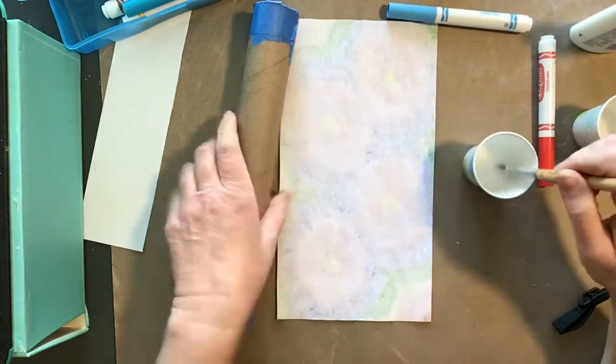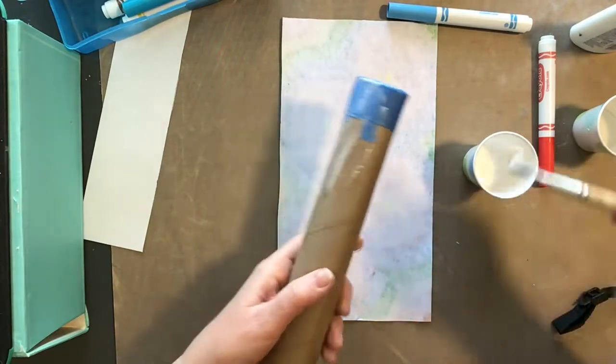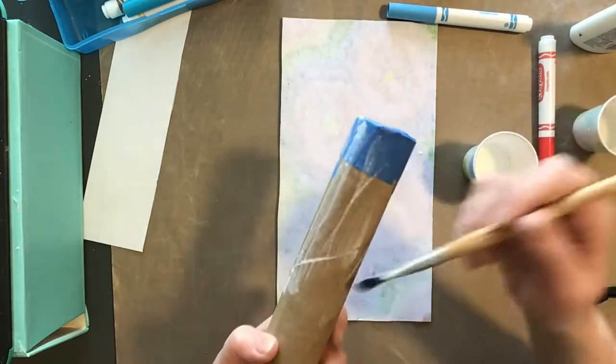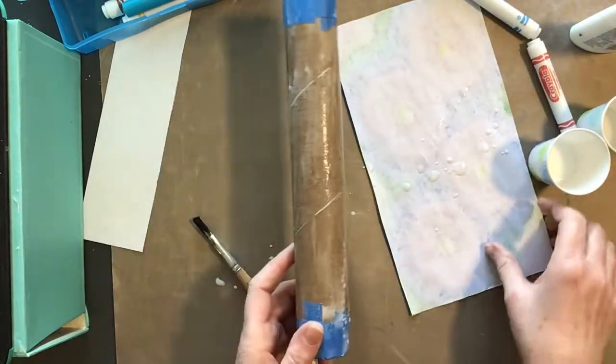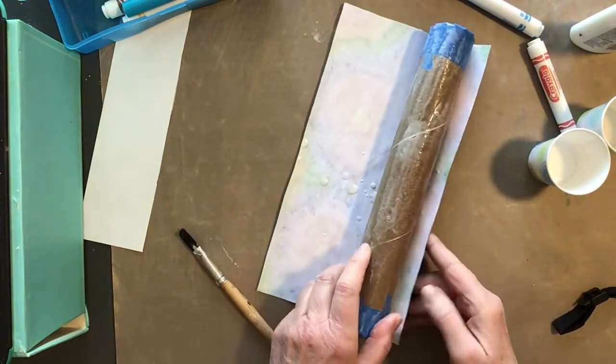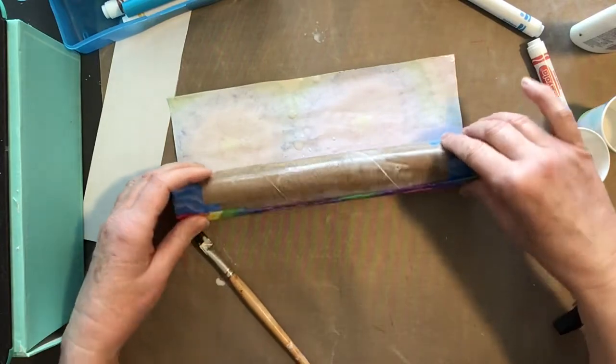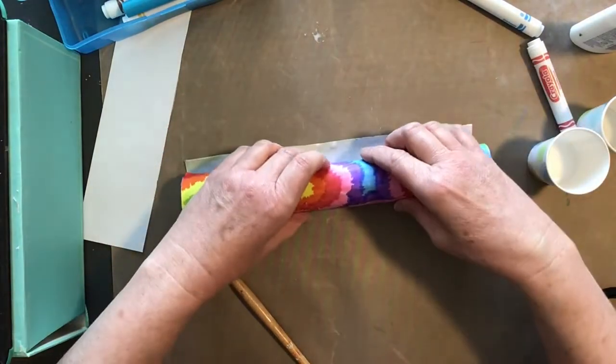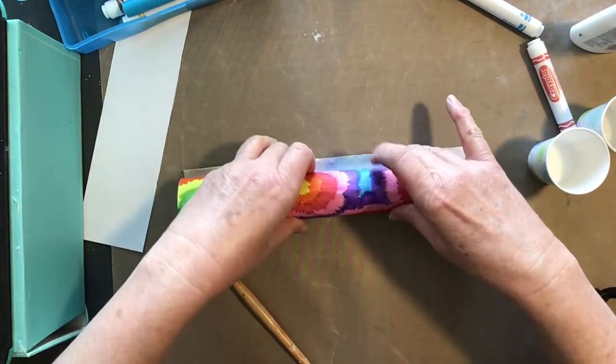If you don't have a brush, you can do it with your finger, I suppose, but I'm going to get this whole thing wet with glue. Then you just roll this around nice and tight.